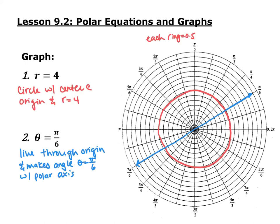r equals some number is a circle that has a center at the origin and a radius of whatever that number is. So if r equals 4, I'd have a radius of 4 — that would be the equation r equals 4. Theta equals some number is a line that goes through the origin and makes an angle of whatever theta is with the polar axis. So if theta equals pi over 6, it's the line through the origin that makes an angle of pi over 6.